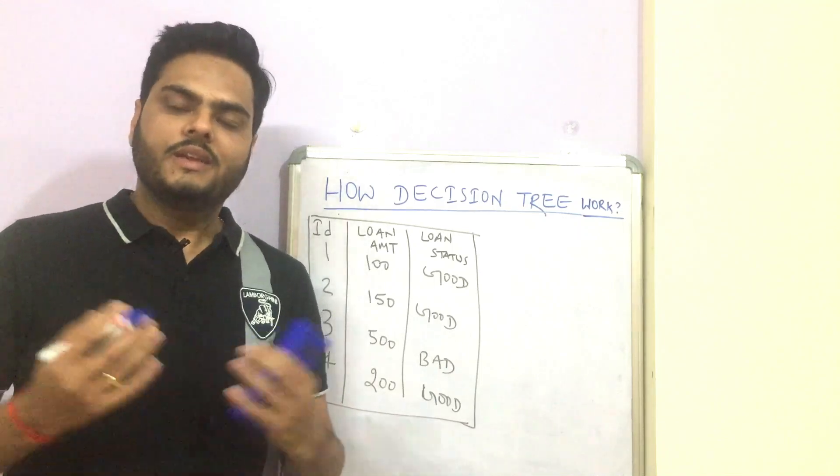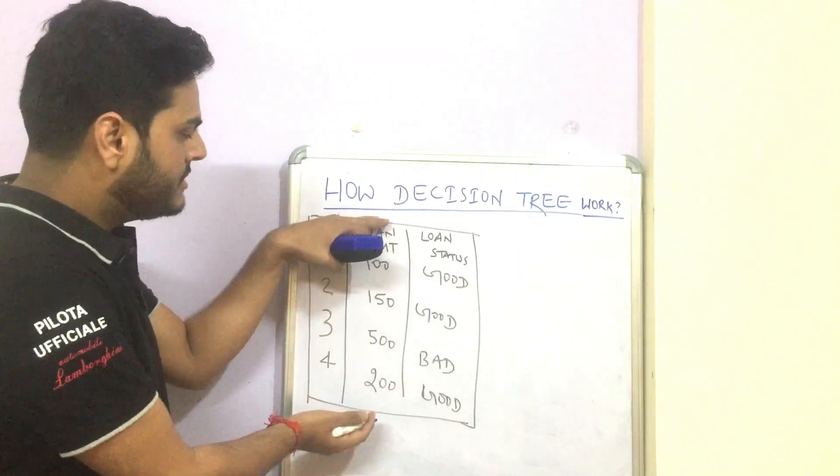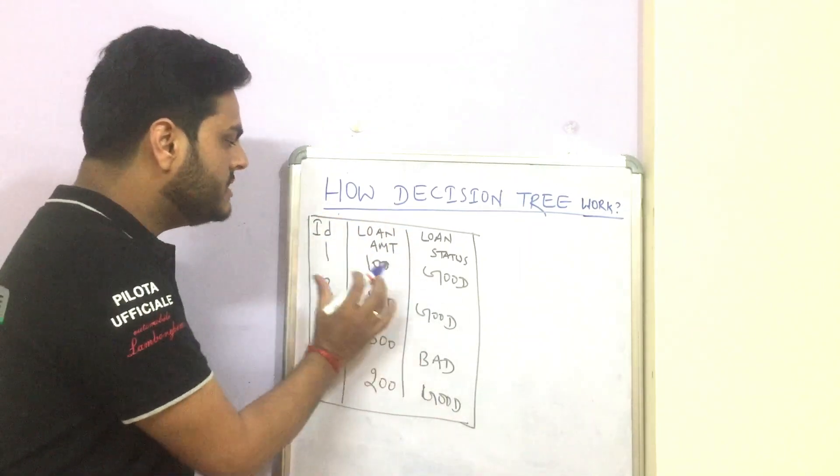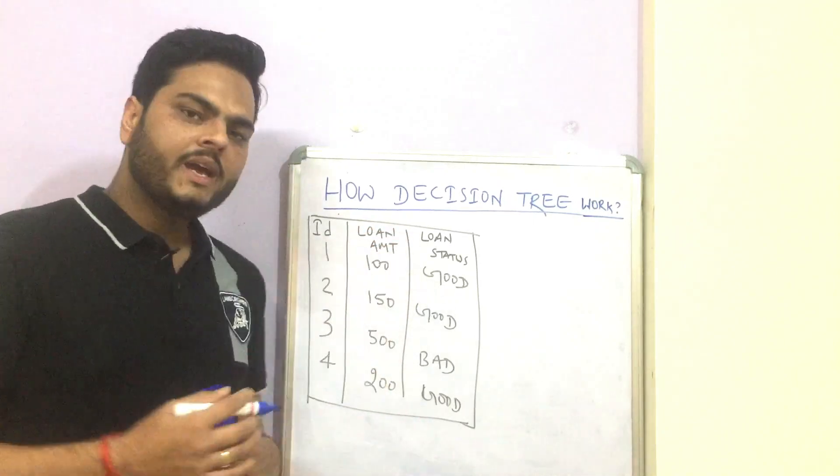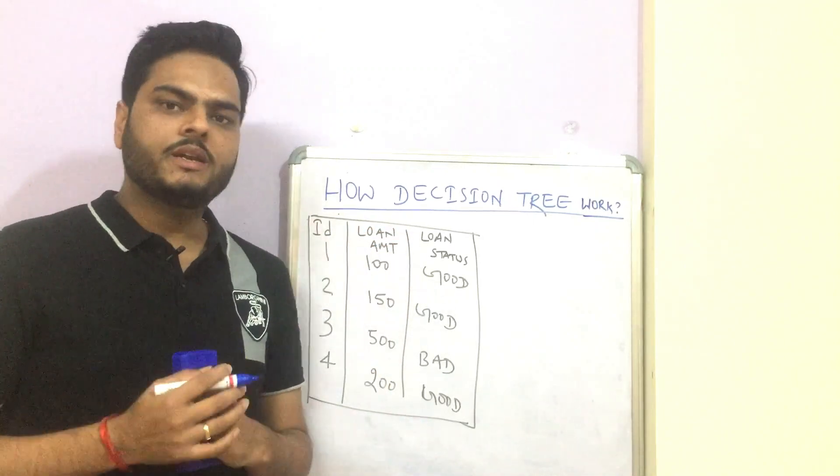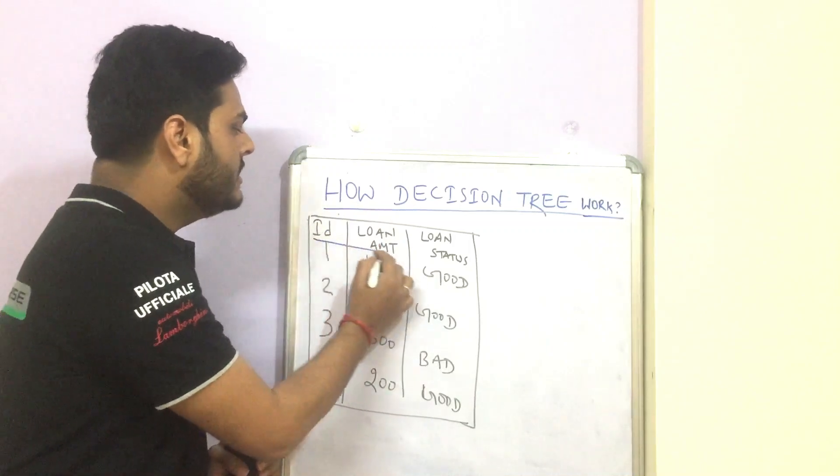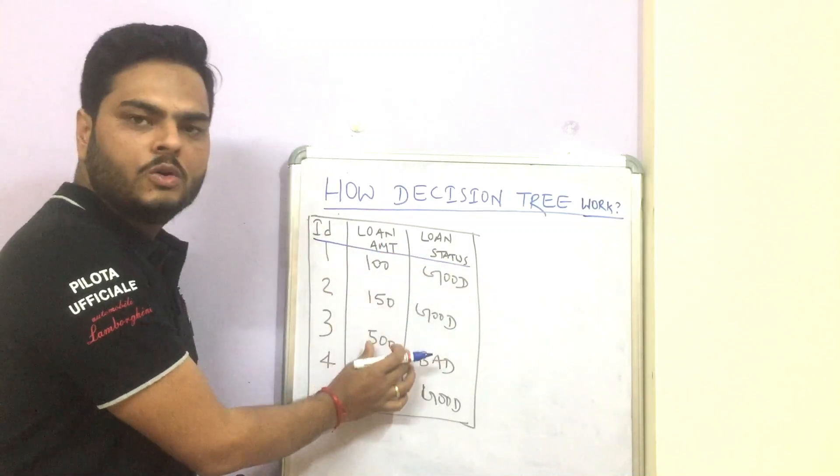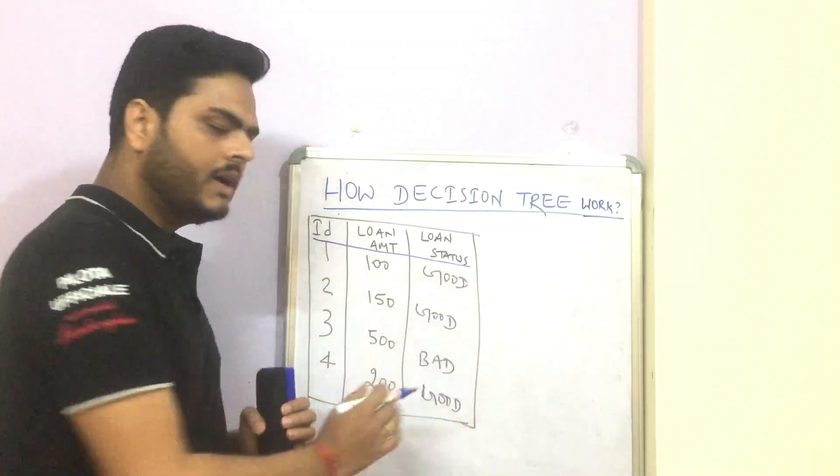How decision tree work? Let's try understanding with a very simple example and this data. So this data is a simple data created by me. You can assume it to be a bank data or financial institution data where we have a historical loan data which says the ID of the customer, the loan amount of the customer and whether that loan turned out to be a good loan or bad loan.